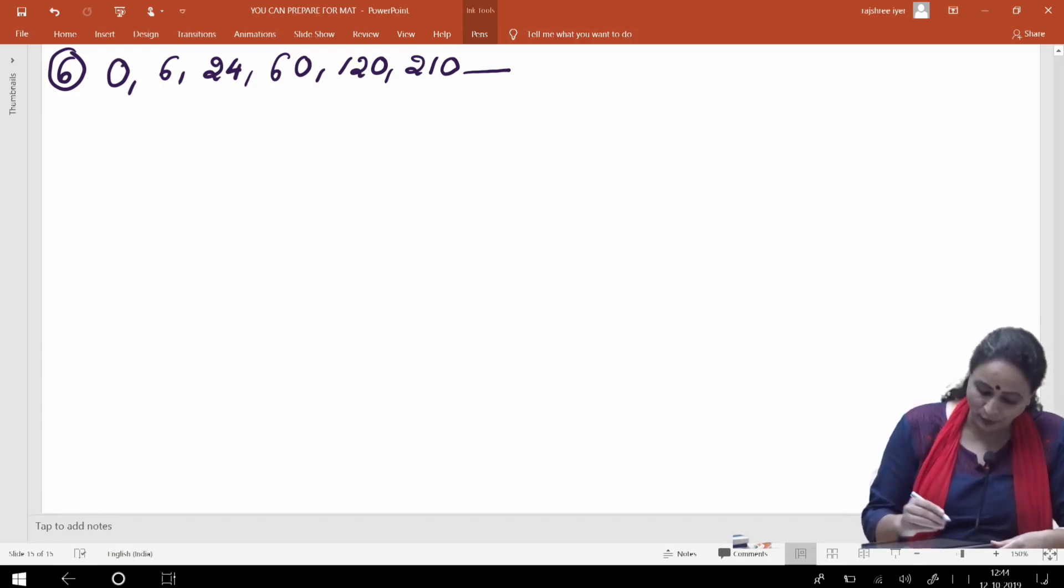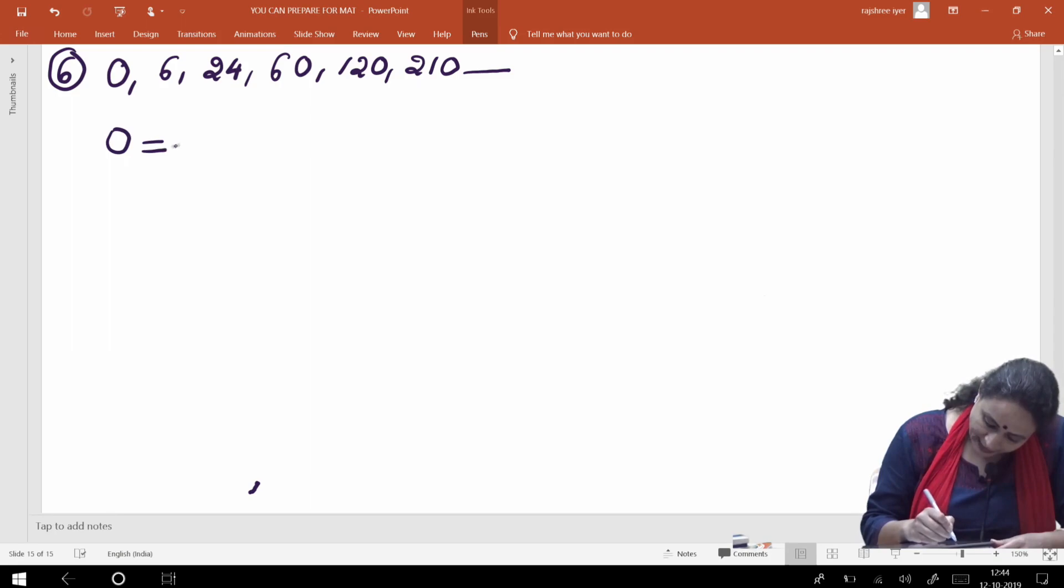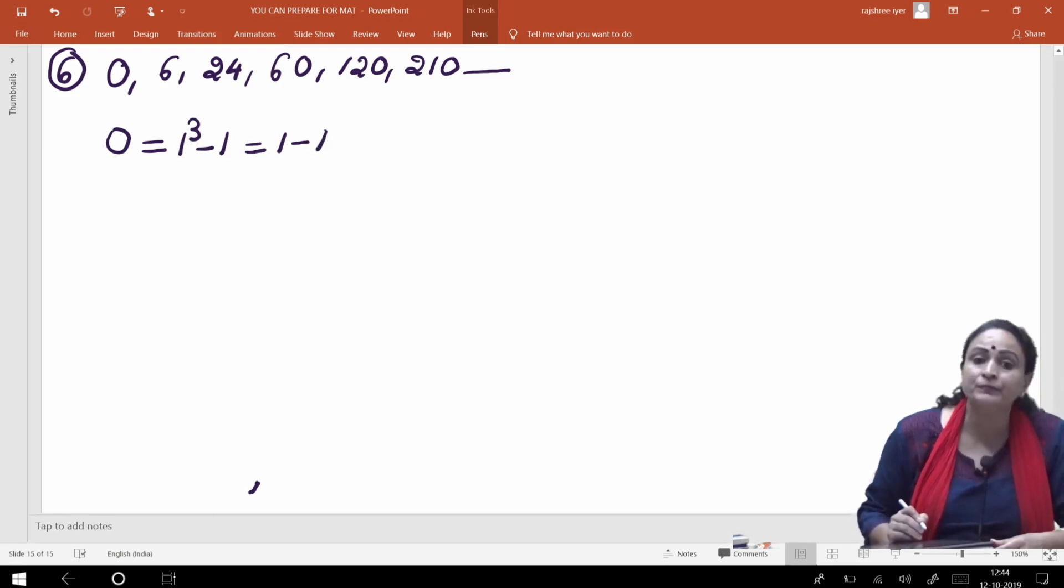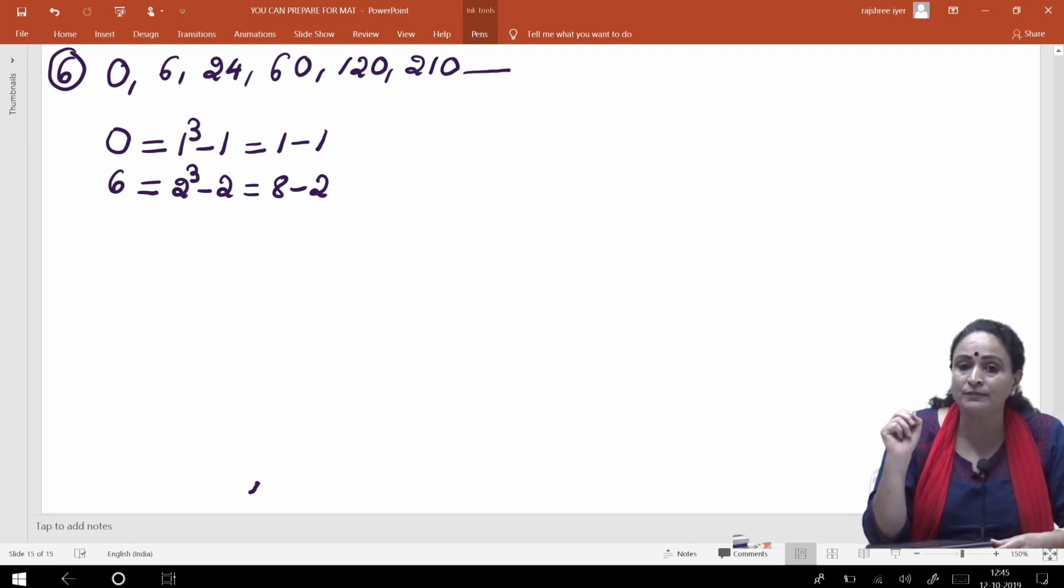Hum bhi batate hain aapko. Dekhiye, pehla jo number hai, woh hai 0. Dusra hai 6. Tisra hai 24. Yahan mujhe ek pattern dikhiye, jo pehla number hai, ish 0, that I can write it as, 1 cube minus 1, which is 1 minus 1, 0. Agla hai 6 hai na. Toh 6 ko aap kya likh sakti ho? 6 ko likh sakti ho, 2 cube minus 2, which is equal to 8 minus 2, which is equal to 6. Toh pattern kya aa rahi? Number jo bhi position pe hai, uska cube karna hai, aur usi ko subtract karna hai.